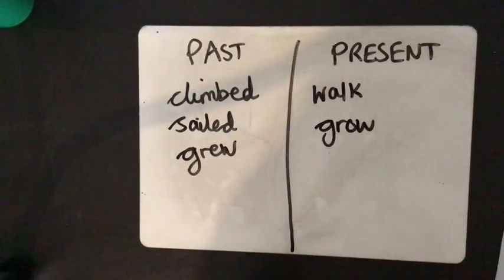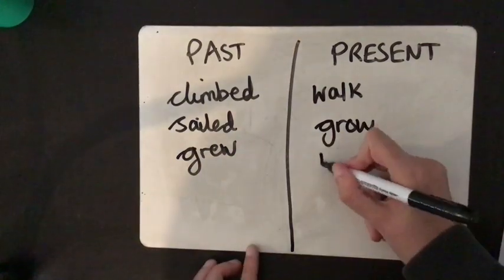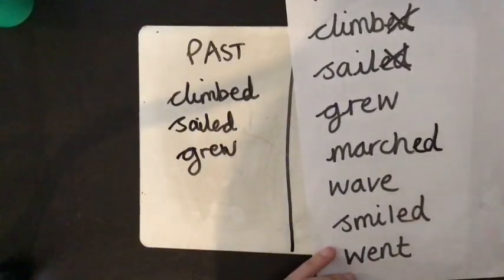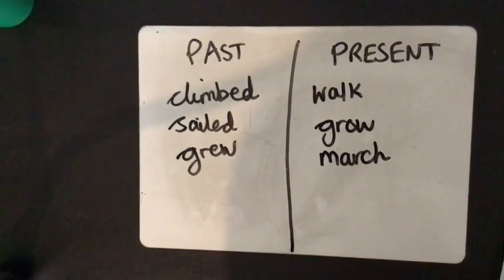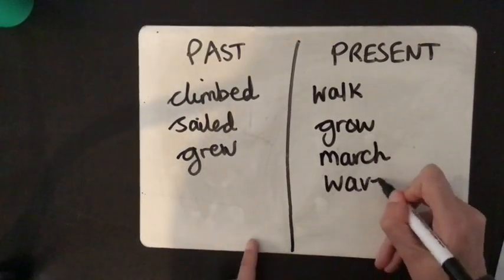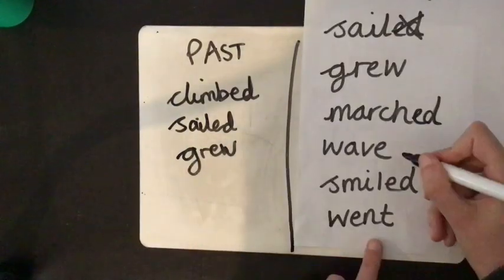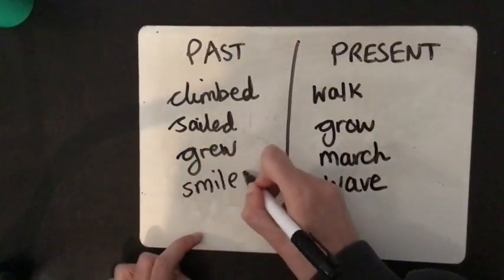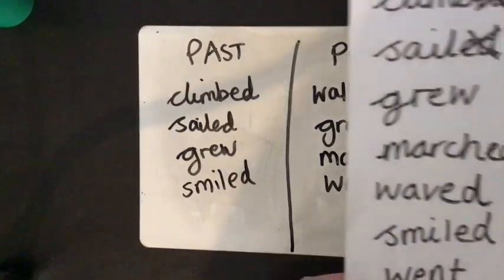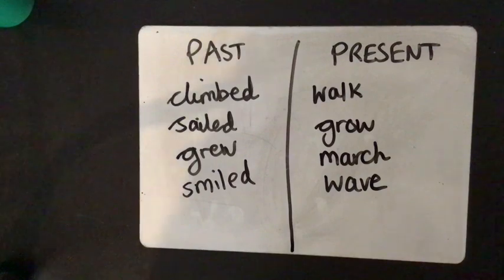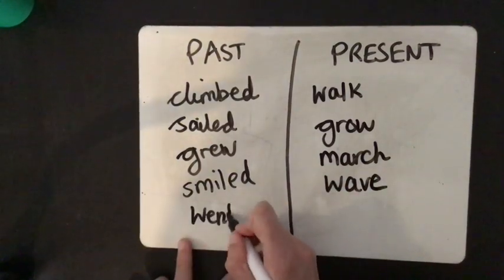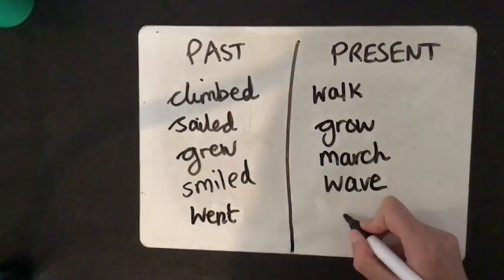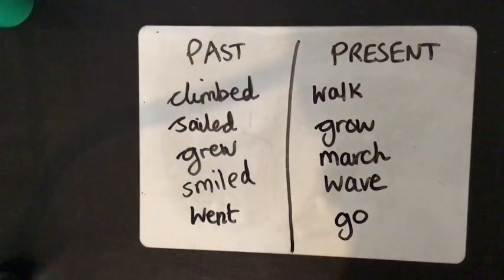Okay the next one. March. March past or present? It's present. If it was past it would have an ed on the end for marched. Wave. Is present. If it was past tense it would have a d for waved. So smiled is past. And the last one went. Oh tricky. Went is a past tense verb. What's the present tense verb for went? It's go. Okay that's challenge one complete. Let's carry on and have some new learning.